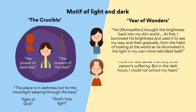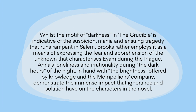Similarly, Anna acknowledges 'in the daylight, when I was more lucid, I knew that her illness had no more, nor less sense than any other person's suffering. But in the dark hours, I could not school my heart.' Moreover, the mine shafts that provide a backdrop to many of the novel's pivotal moments, including Sam's and Anna's father's deaths, are characterized as dark and grimy, reaffirming the association of darkness and fear. In an essay, you could say: 'While the motif of darkness in The Crucible is indicative of the suspicion, mania, and ensuing tragedy that runs rampant in Salem, Brooks rather employs it as a means of expressing the fear and apprehension of the unknown that characterizes Eyam during the plague. Anna's loneliness and irrationality during the dark hours of the night, in contrast to the brightness offered by knowledge and the Mompellier company, demonstrate the immense impact that ignorance and isolation have on the characters in the novel.'